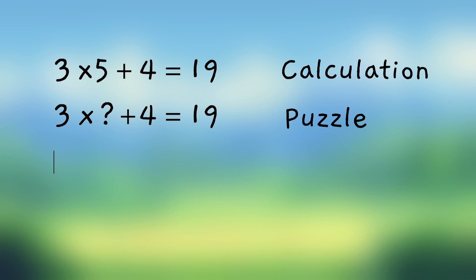In algebra, though, when writing this down, we don't want to use a question mark to stand for an unknown number. There's several reasons for this. One is that oftentimes you're dealing with puzzles where there's more than one thing you don't know. And you can't, there's only one question mark.